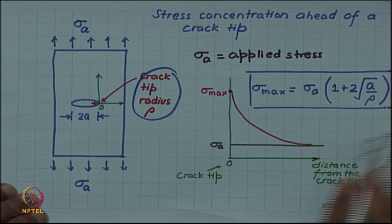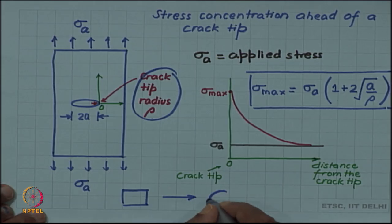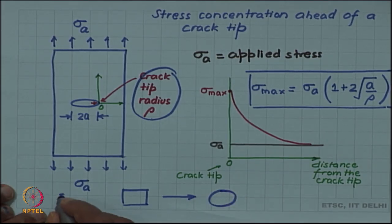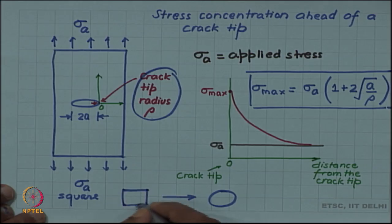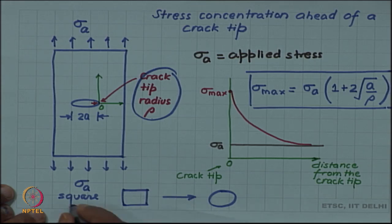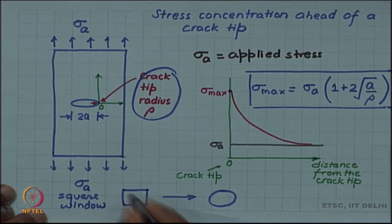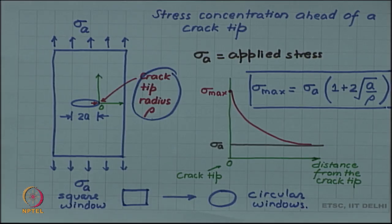It is much better to have rounded geometries. For example, in the aircraft industry a change took place from square windows to round windows. A window is not a crack, but it is an opening and there will be stress concentration around the window edge. At the square corners the radius is very small, so the concentration will be very high. Initial failures were often noted at the corners of square windows. Gradually they went for circular or oval windows to reduce such stress concentration.